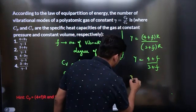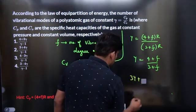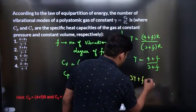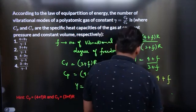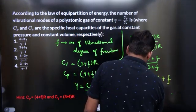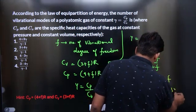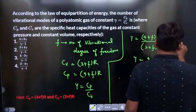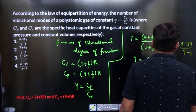This would be 3 times gamma, 3 times F, sorry, F times gamma. This would be F times gamma is equal to 4 plus F. Now this would be F times gamma minus 1 is equal to 4 minus 3 times gamma divided by gamma minus 1.